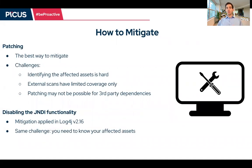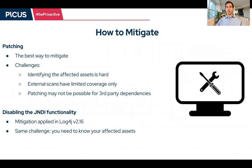Now let's get to the most important thing — how can you mitigate the Log4J vulnerability in your environment? Obviously, the best thing would be to patch all the affected systems. But the challenge is finding all the assets that are affected. You cannot just do an external scan of your environment using tools or services out there, because most often they rely on things like Apache version and cannot really find all the systems that have Log4J embedded.